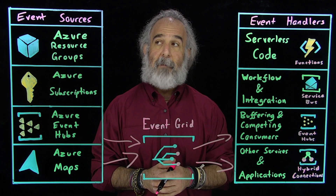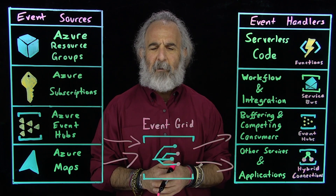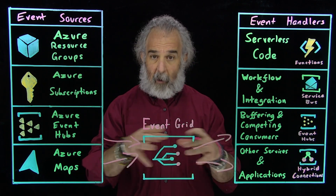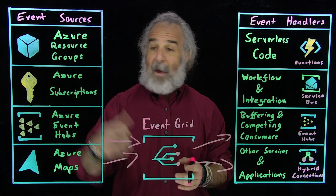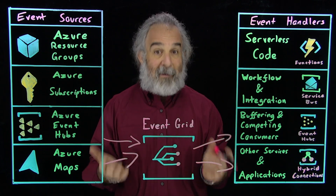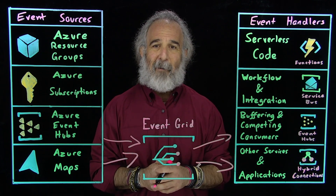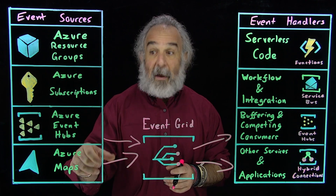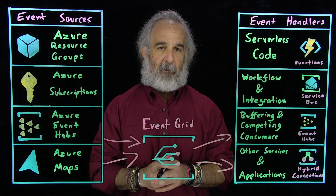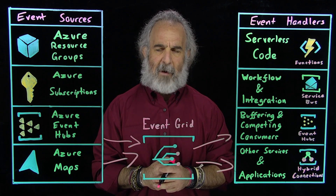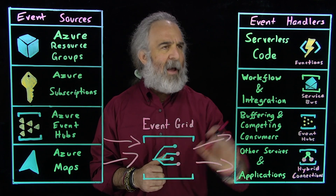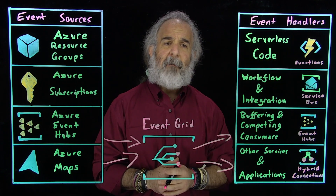When we think about the why — why would we want to use Event Grid? — why do we need to take all these event sources: things from Azure resource groups, our containing elements that have all of our objects; the Azure subscription or subscriptions we may have; the all-up entity that contains everything we do; other event hubs; other elements that process events; or any of the services and capabilities that can create event sources? There are an almost unlimited number of them in Azure. Why would we want to move that information through a central mechanism to process it and then send it over to one or more event handlers?